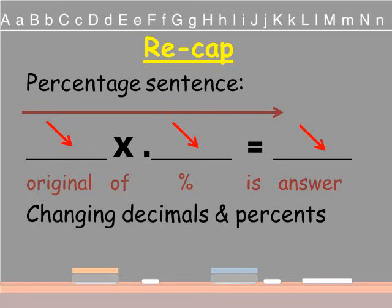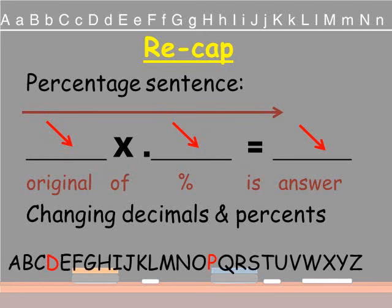Then we have to change our percent and our decimals back and forth. And the way we remember that is we move our decimal point. We look at the alphabet as our little reminder. And if we're going from decimal to percentage, we're going to move it two places to the right. And if we're going from percent to decimal, we're going to move it two places to the left.